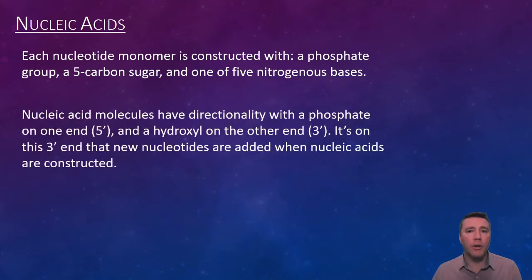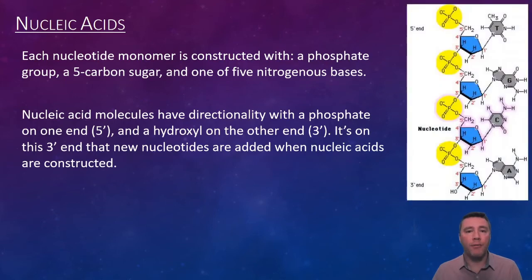The five carbons in the sugar can be identified individually with a numbering system. The number five carbon, more accurately called the five-prime carbon, is where the phosphate group is attached. The one-prime carbon is where the nitrogen base is bonded. And the three-prime carbon possesses a hydroxyl group, which, as we've seen before, is important in dehydration synthesis. In a nucleic acid, two nucleotides are joined together by a phosphodiester bond, which exists between the three-prime carbon of one nucleotide and the five-prime carbon of another.